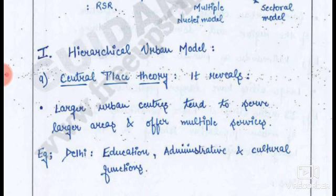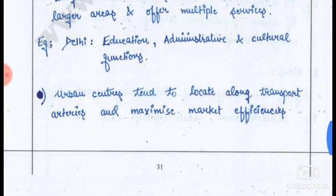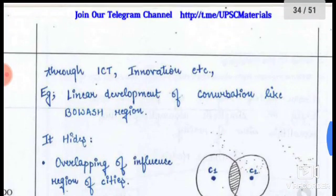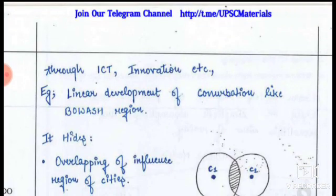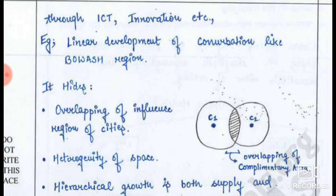Central Place Theory reveals that larger urban centers tend to serve larger areas and offer multiple services including education, administrative, and cultural functions. Urban centers tend to locate along transport arteries and maximize market efficiencies through ICT and innovation, such as linear development like the Boston region.